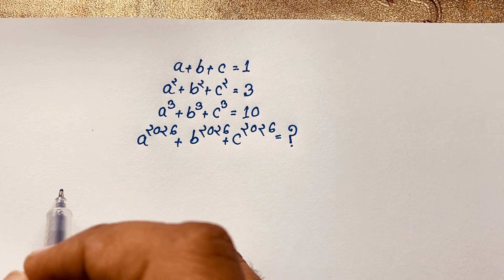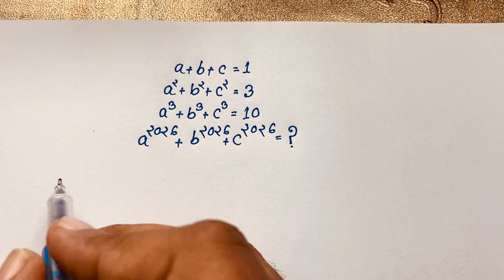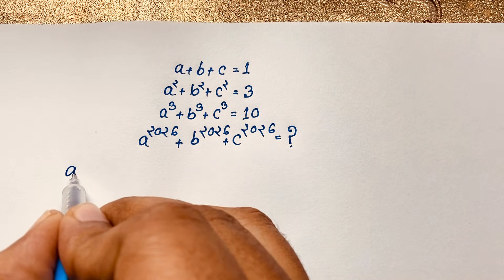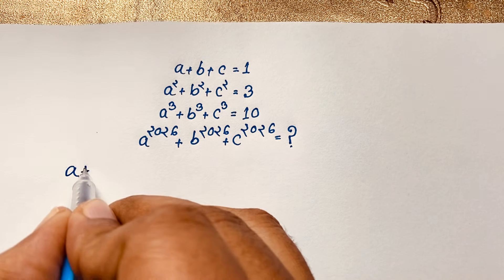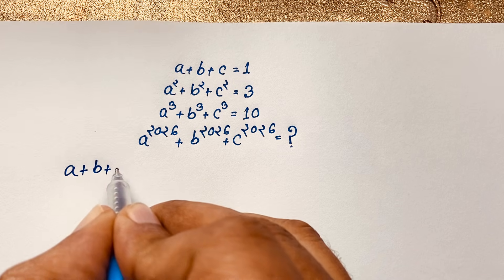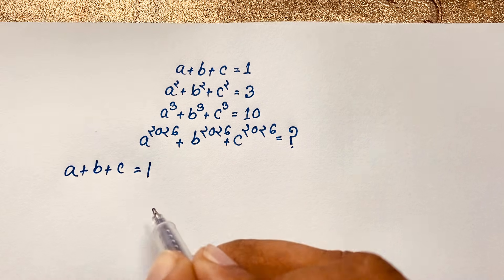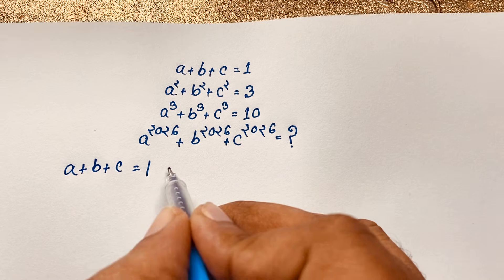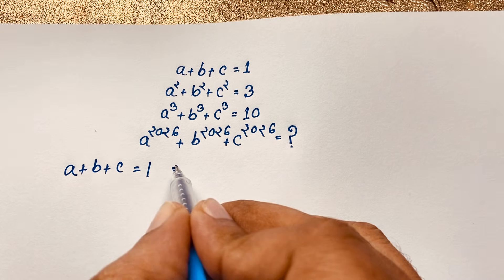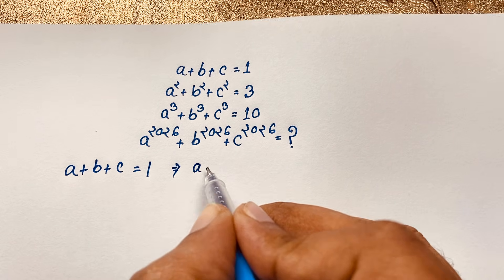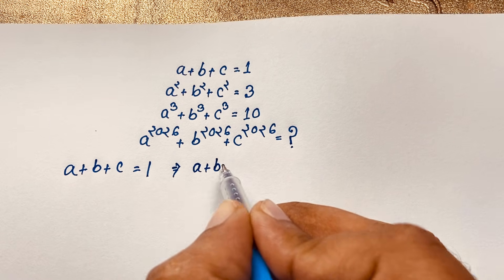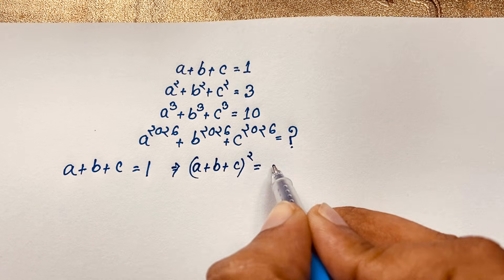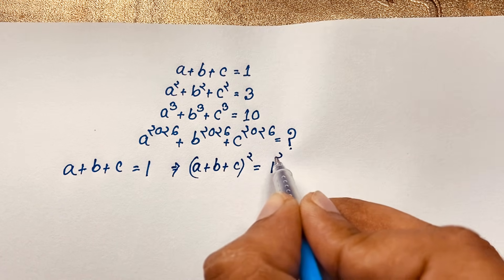Now I will solve this interesting maths question using a method. First of all, I take our first equation, which is a plus b plus c is equal to 1. I use the whole square on both sides, so a plus b plus c, bracket to the power 2, is equal to 1 to the power 2.